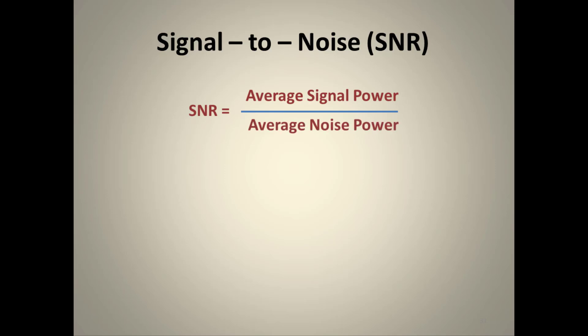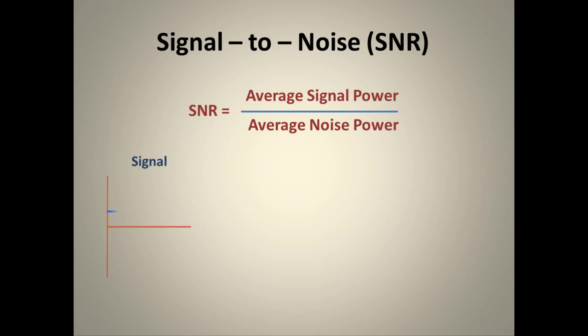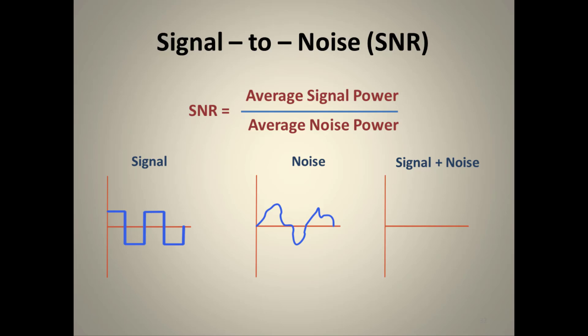Signal-to-Noise Ratio (SNR) measures the quality of the signal. It is the ratio of average signal power to average noise power. The best SNR value is infinity and the worst is zero. When signal power is large and noise is small, SNR is high and the received signal is only slightly distorted. When noise power is large relative to signal power, only noise is received — this is the worst case.